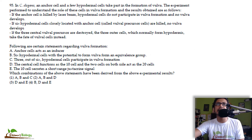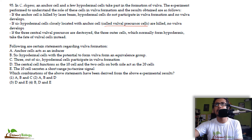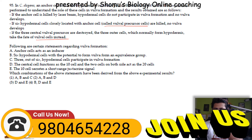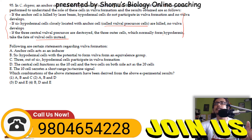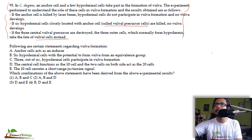In C. elegans, an anchor cell and a few hypodermal cells take part in vulva formation. Experiment results: if the anchor cell is killed by laser beam, hypodermal cells do not participate and no vulva develops. If the six hypodermal vulva precursor cells are killed, no vulva develops. If the three central vulva precursor cells are destroyed, the three outer cells — which normally form hypodermis — take the fate of vulva cells instead. This question is from the basics of vulva development in C. elegans.